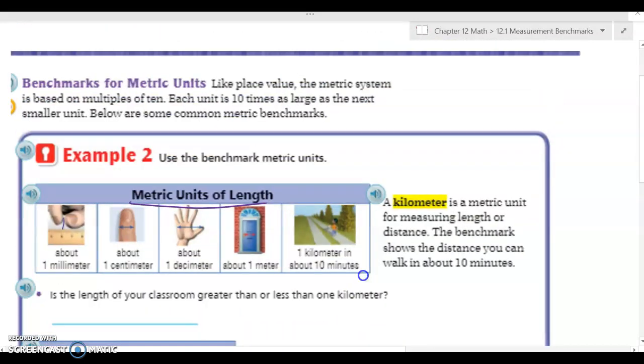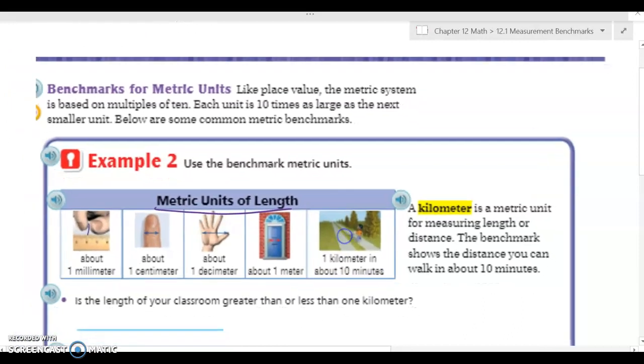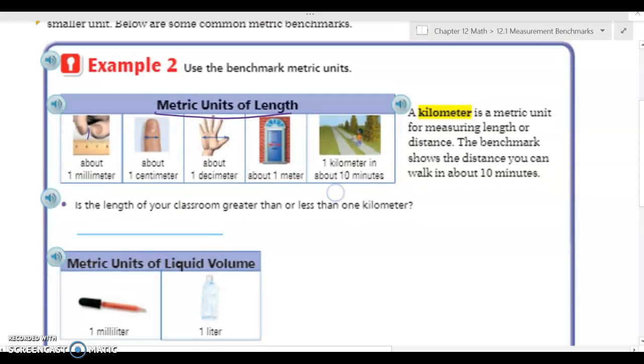Okay, we have benchmark units for metric units. Metric is another way of measuring things. So like place value, the metric system is based on multiples of 10. Each unit is 10 times larger than the next smallest unit. Below are some common metric benchmarks. A millimeter is about the width of a pin, a centimeter is about the width of your finger going across, a decimeter is about the width of your hand when you hold it out, your doorway is about one meter, and a kilometer is about how far you can walk in 10 minutes.